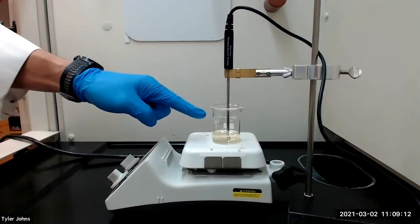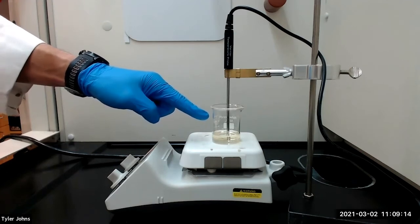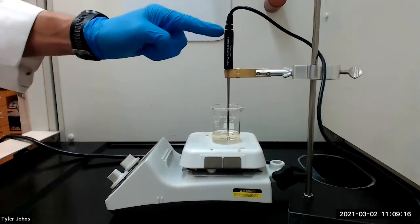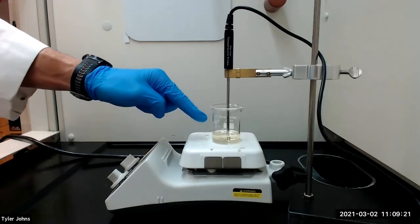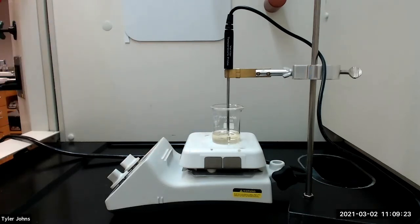We will next place the 50 milliliter beaker with our biodiesel on a hot plate and insert a thermometer into the biodiesel. We will heat the biodiesel to about 70 degrees Celsius for 15 to 20 minutes to remove all of the methanol.